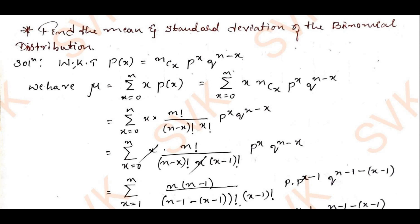For that, we need to go with the known definition. Using the definition of binomial distribution, p(x) can be defined as nCx · p^x · q^(n−x).